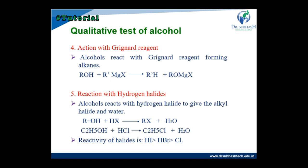The fourth test is the action with the Grignard reagent. Alcohol reacts with the Grignard reagent forming an alkyl complex. The Grignard reagent is represented as RMgX. When alcohol reacts with the Grignard reagent, an alkene molecule is formed and a complex R-O-MgX is liberated.